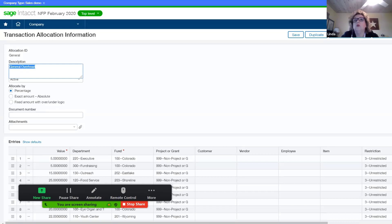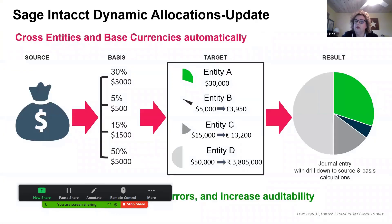For those more advanced types of allocations, you're going to want to look at dynamic allocations. It will automatically create those journal entries for you. In release R3, we released the ability to go across entities and base currencies — a significant enhancement ensuring you can cross entities and base currencies automatically with the same dynamic allocation functionality.